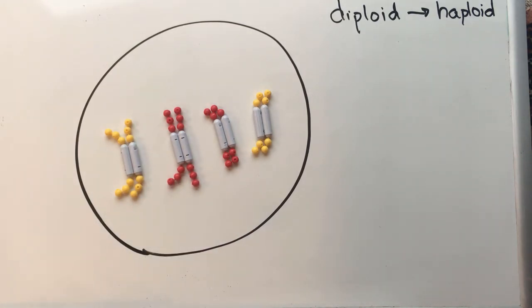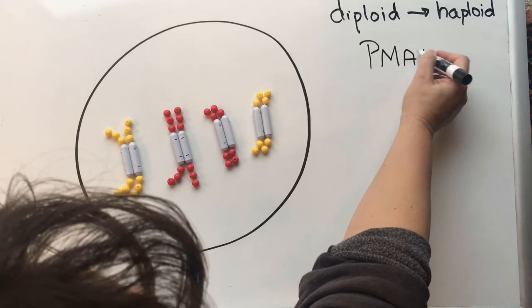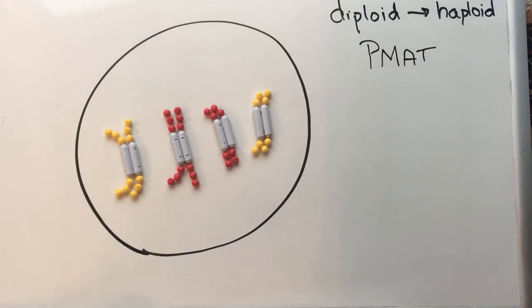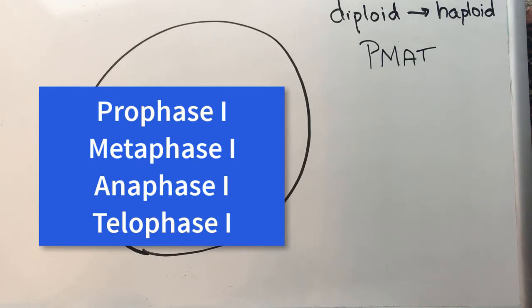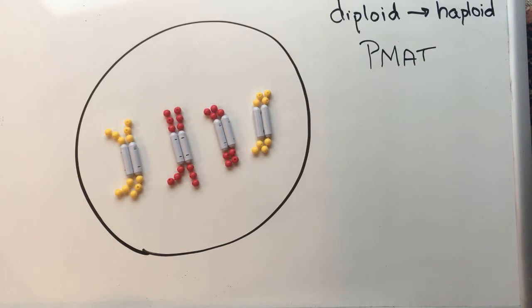The phases in meiosis are the same as in mitosis — prophase, metaphase, anaphase, telophase — but we go through two rounds of division: meiosis 1 and meiosis 2. In meiosis 1 we have prophase 1, metaphase 1, anaphase 1, and telophase 1; in meiosis 2 we have prophase 2, metaphase 2, anaphase 2, and telophase 2. All the stuff that's different happens in meiosis 1; meiosis 2 is pretty much the same as mitosis.